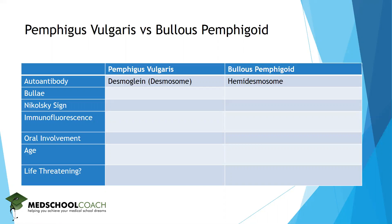In contrast, the bullous pemphigoid target is hemidesmosome. Pemphigus vulgaris is almost always worse in terms of all the rest of this chart. The bullae are going to be flaccid, which means they're more easily shearable — this goes hand-in-hand with a positive Nikolsky sign.